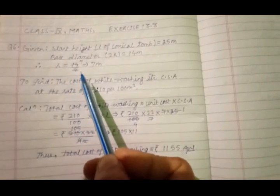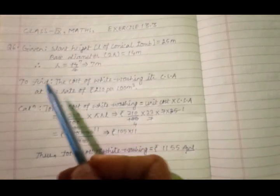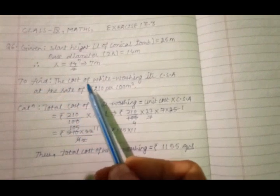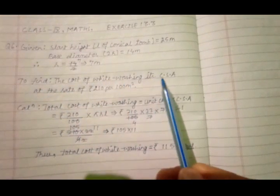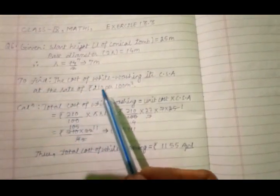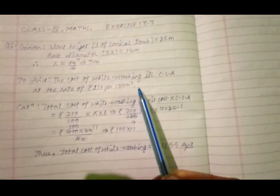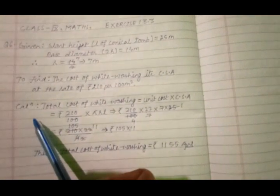Therefore radius R becomes half of 14, which is 7 meter. For all this we have to find the cost of whitewashing its CSA at the rate of rupees 210 per 100 square meter. So let's start calculating this.